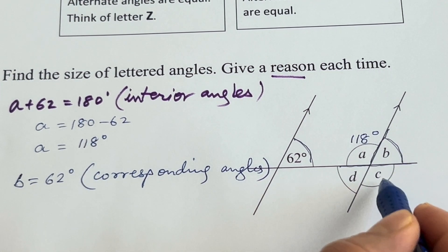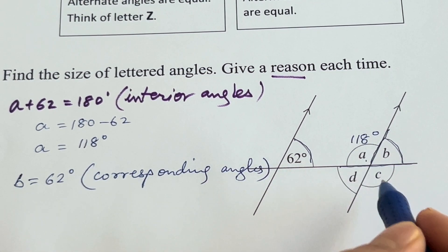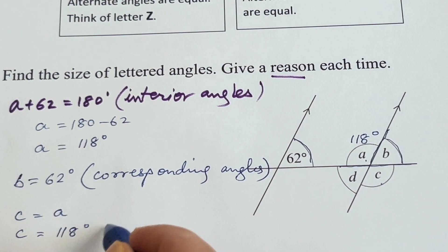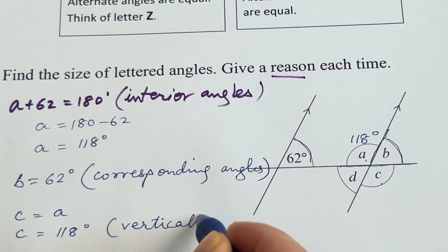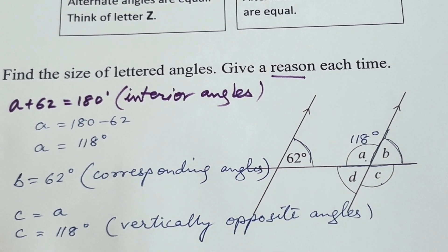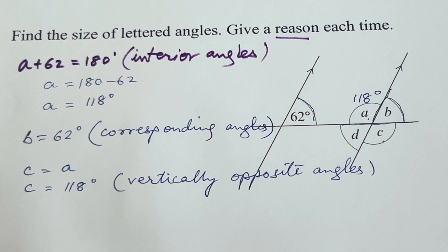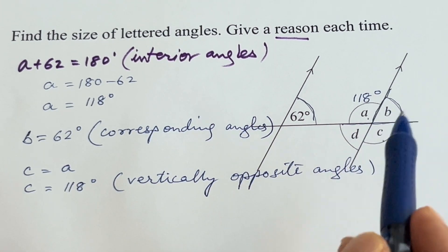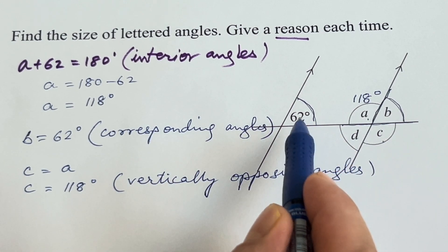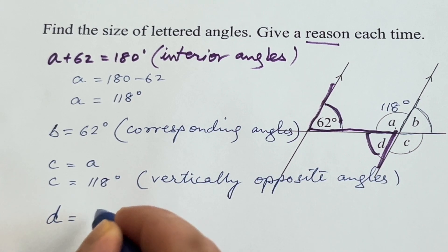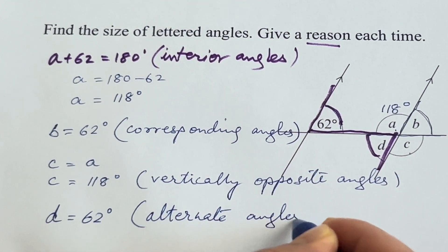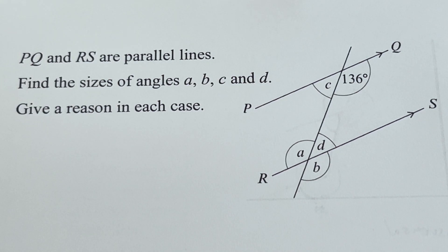For angle C: A and C are vertically opposite angles, so C equals A, which is 118 degrees. Vertically opposite angles are equal. For angle D: D and B are vertically opposite angles, so D equals 62 degrees. Alternatively, 62 and D are alternate angles, which are equal.